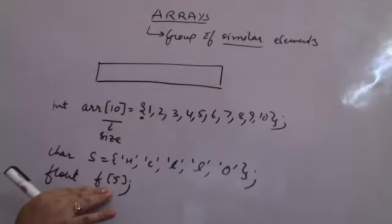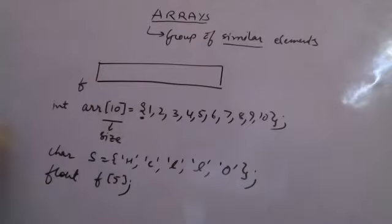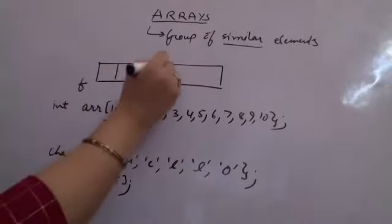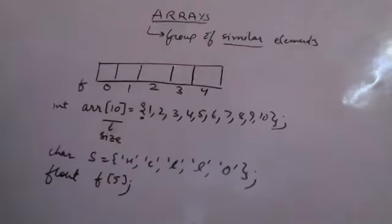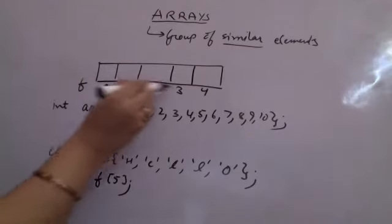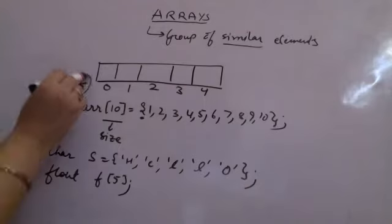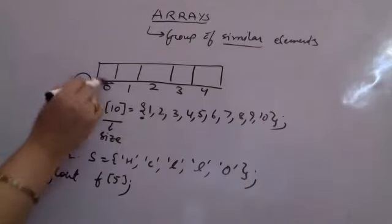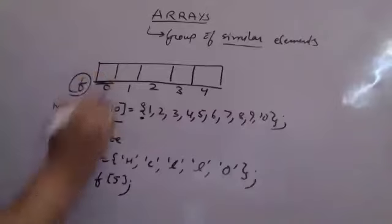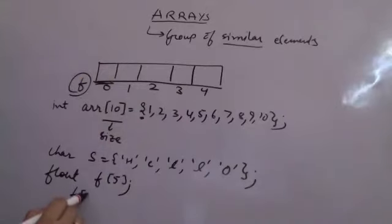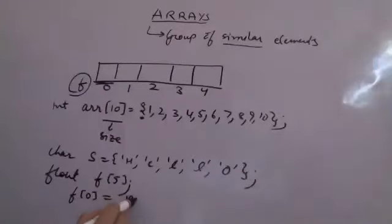After the declaration of float F[5], the compiler will create a space for F with 5 float spaces that can be indexed from 0 to 4. The index for arrays always begins with 0. If I want to give some value to the first location, I do F[0] = 12.5.